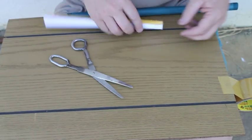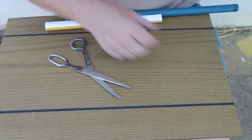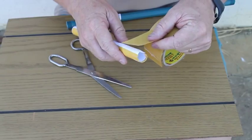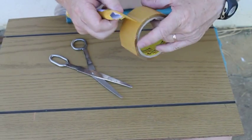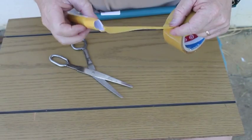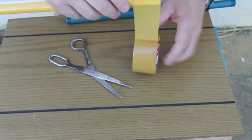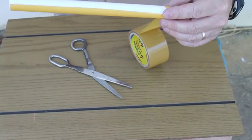Get some more tape. Now remember a rocket always flies heavy end first, so you can add some weight effectively by adding some more.